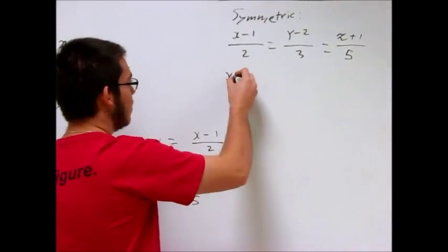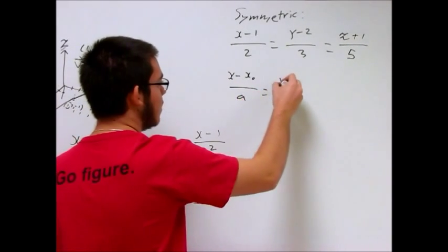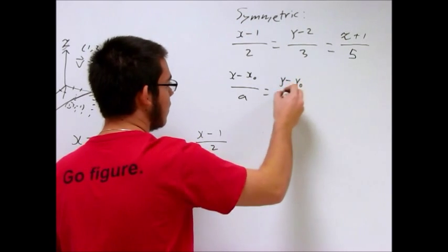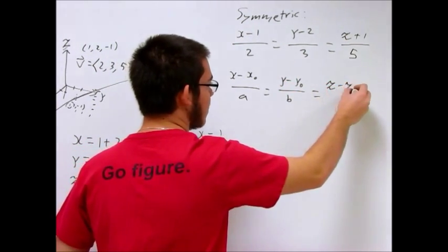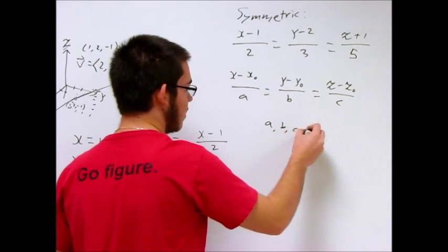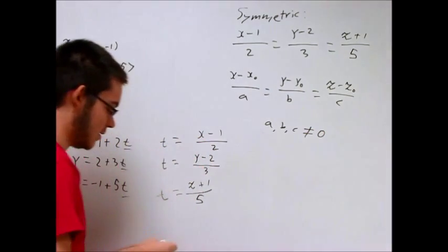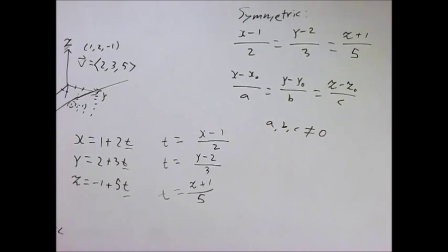this is generalized to x minus x knot over a equals y minus y knot over b equals z minus z knot over c where a, b, c are not 0, of course. And so basically those are the two ways to describe a line in three dimensions.